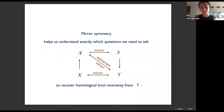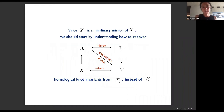We have a pair of mirror symmetries — one upstairs, one downstairs. This pair helps us understand exactly which questions we need to ask to recover homological knot invariants from our manifold Y downstairs. Last time we explained how to do it from the big X upstairs. We call the upstairs spaces big X and big Y, and the downstairs spaces small X and small Y. In the last lecture I explained how homological knot invariants arise from big X; now I'd like to explain how they come out from small Y.